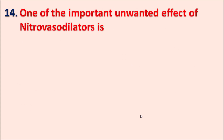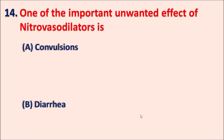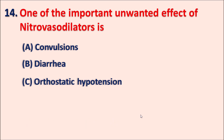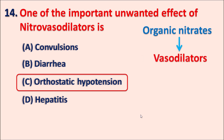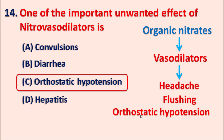Question 14: One of the important unwanted effects of nitrovasodilators is: A. Convulsions, B. Diarrhea, C. Orthostatic hypotension, D. Hepatitis. Nitrovasodilators, also called organic nitrates, show different types of side effects. The right answer is C — orthostatic hypotension. Organic nitrates release nitric oxide and act as vasodilators. Because of their vasodilatory effects they can produce side effects including headache, flushing, orthostatic hypotension, and reflex tachycardia. So orthostatic hypotension is one of the important side effects of nitrovasodilators.